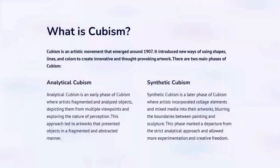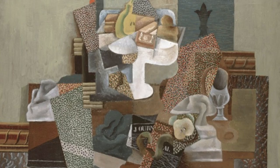What is Cubism? Cubism is an artistic movement that emerged around 1907. It introduced new ways of using shapes, lines, and colors to create innovative and thought-provoking artwork.